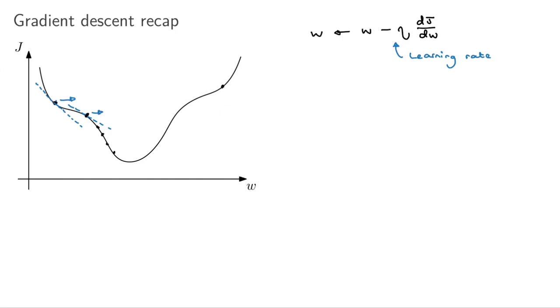If we started here, for instance, then the derivative would have gone like this, which is positive. So we have a positive number, some positive number here minus. So we would have moved our W in that direction.